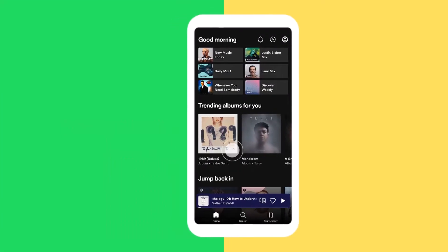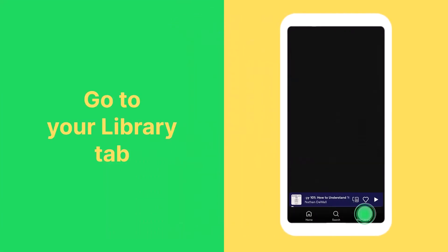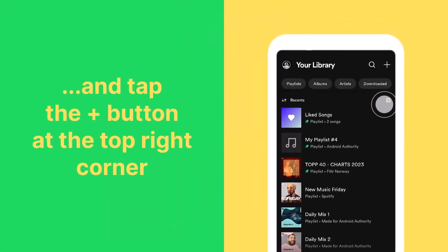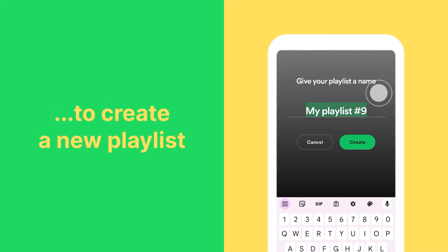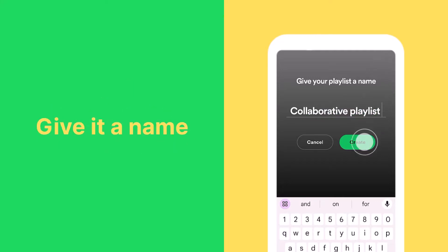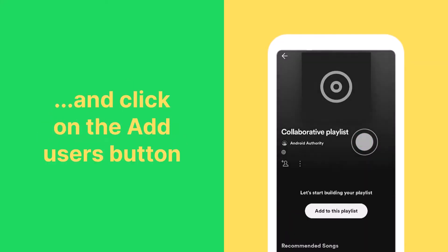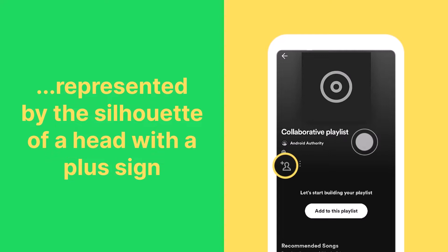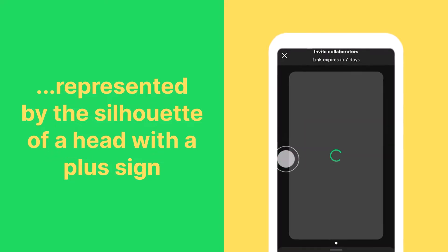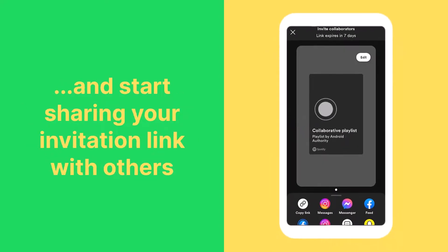If you're on mobile, go to your library tab and tap the plus button at the top right corner to create a new playlist. Give it a name and click on the add users button represented by the silhouette of a head with a plus sign, and start sharing your invitation link with others.